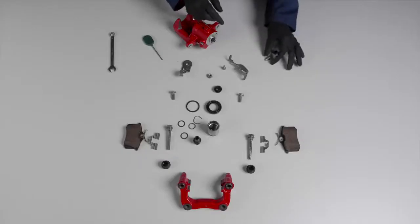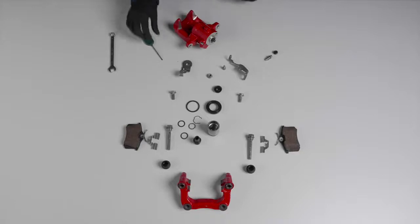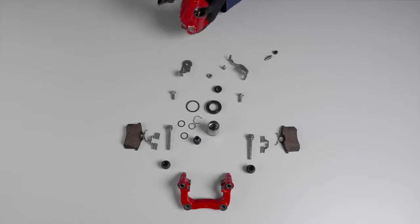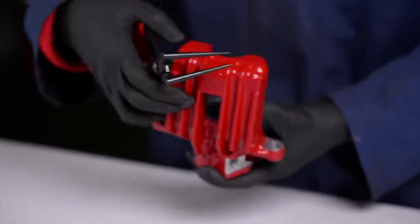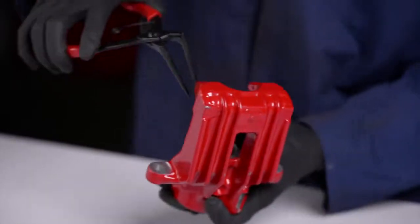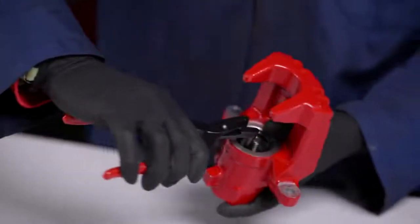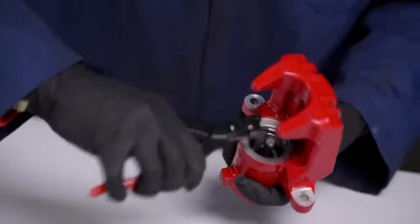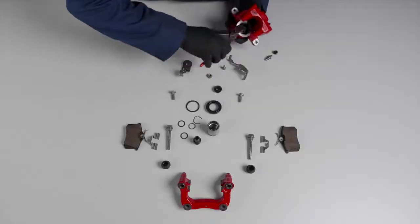It is the turn of the internal components of the caliper. Like piston components, there are a wide variety of them. With the help of these long circlip pliers, you can extract the retaining ring. It is a metallic component, also known as an elastic ring, that keeps the mechanism secure inside the caliper body.